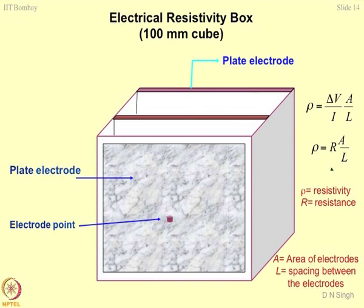I would like to show some in-house developments done by my students. This is a two-electrode method where two plate electrodes were arranged in a cubical fashion forming a 100 mm cube, with one electrode on the front face and another on the back face. An electrode point allows you to apply voltage across the two faces and fill the material in between. You know the volume of the soil mass and the area of cross-section.